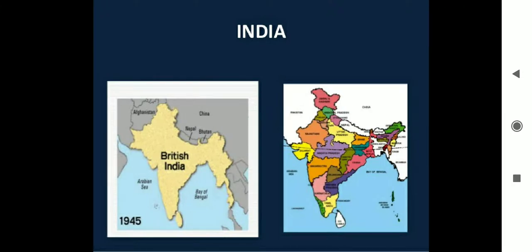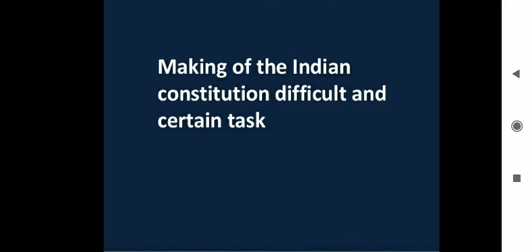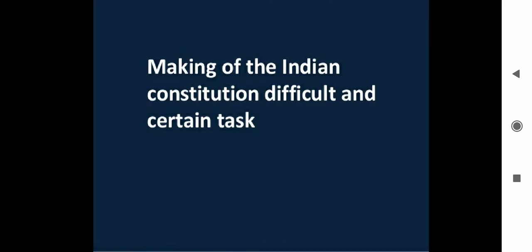In 1945, the map of India was that of British India, and after 1947 we have the map of India as we know it today. We will now read about the making of the Indian Constitution.